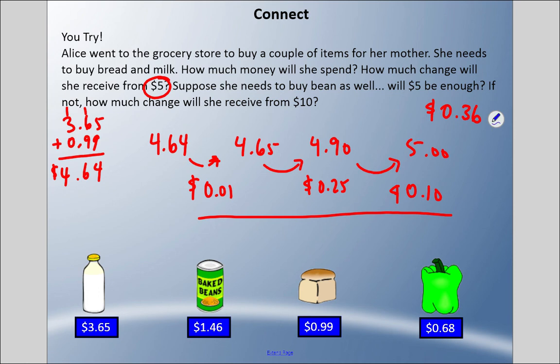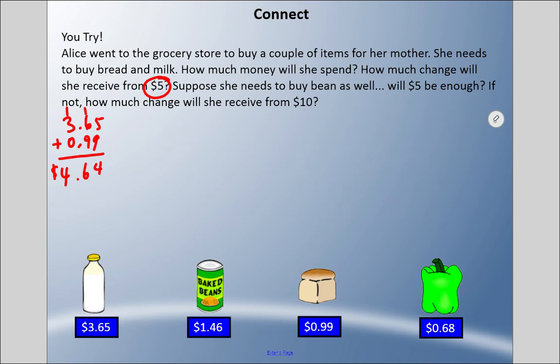The other method is right to left: $5 minus $4.64. I have to borrow all the way back. This becomes 10, but becomes 9 right away. This becomes 10 but gives one away, so becomes 9 too. 10 minus 8 is 2, 9 minus 4 is 5, 9 minus 6 is 3, wait that's wrong. Let me recalculate: 10 minus 4 is 6, 9 minus 6 is 3. So $0.36. Now she wants beans, so it was $4.64 plus $1.46, that's $6.10. Clearly $5 is not enough.